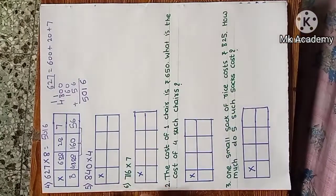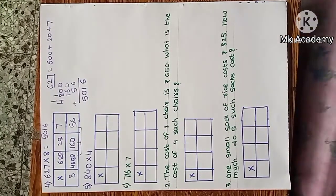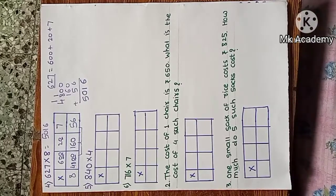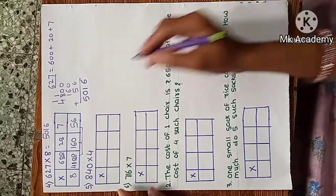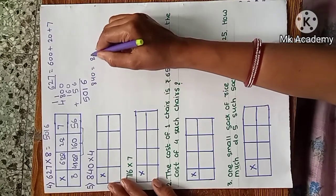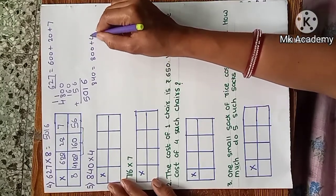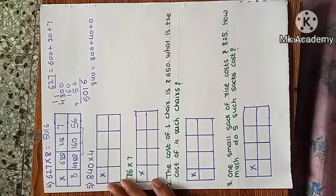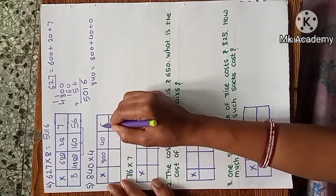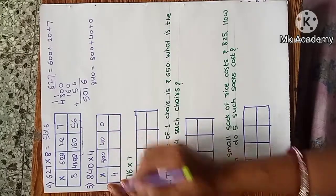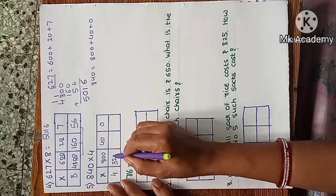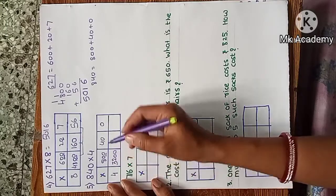Next example: 840 multiplied by 4. 840 is equal to 800 plus 40 plus 0. Now 840 with 0, multiplied by 4. 4 eights are 32, so 3200. 4 fours are 16, so 160. And 4 times 0 is 0.